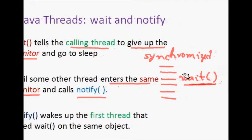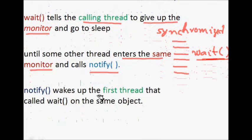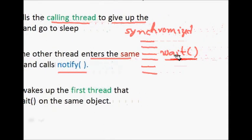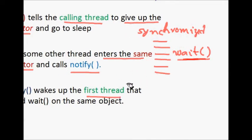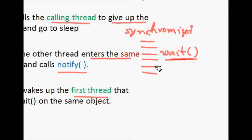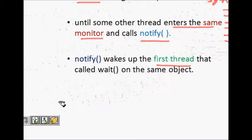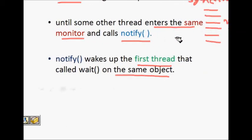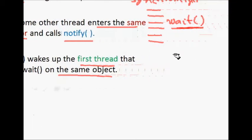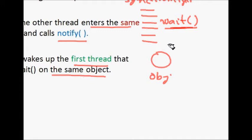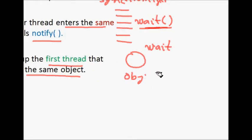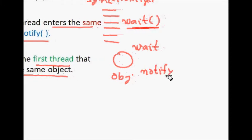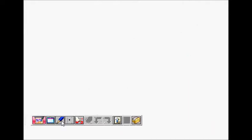The waiting thread will wait until some other thread enters the same monitor and calls notify. Notify wakes up a waiting thread, telling it that whatever work it was waiting for is now done. The wait and notify must be on the same object - one thread calls wait on the object, then another thread calls notify on that same object to signal that the work is complete.